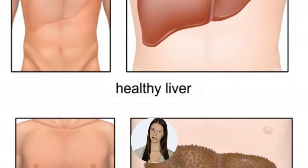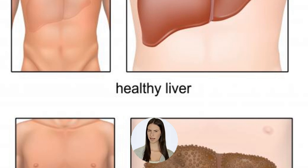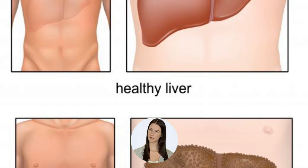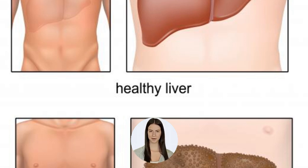Since antibodies are used to fight bacteria and viruses, an unusually high amount, or hypergammaglobulinemia, is often a sign of infection. It can also indicate liver problems like chronic liver disease and cirrhosis, or autoimmune diseases such as lupus and rheumatoid arthritis.